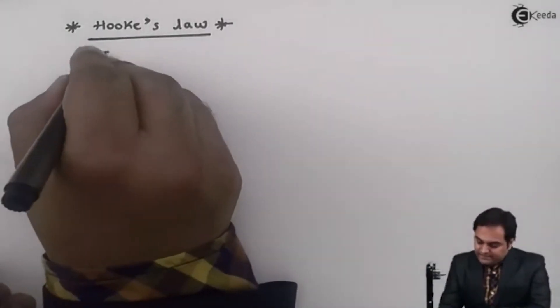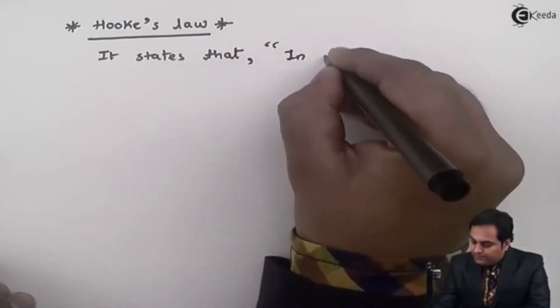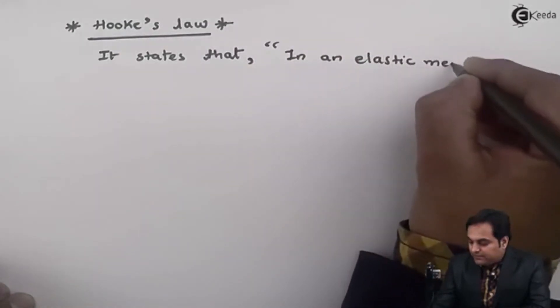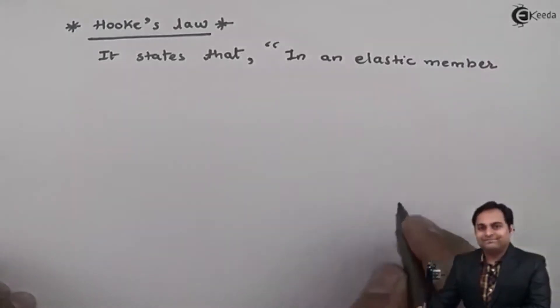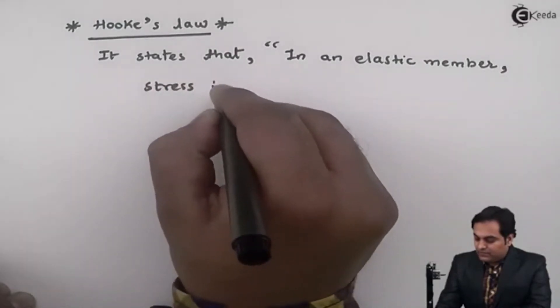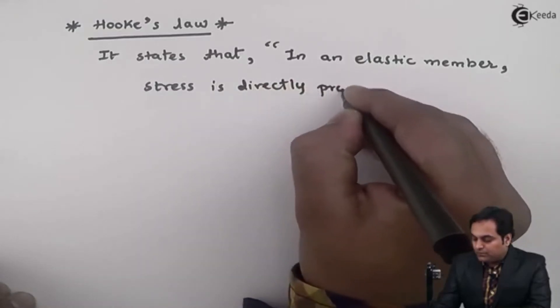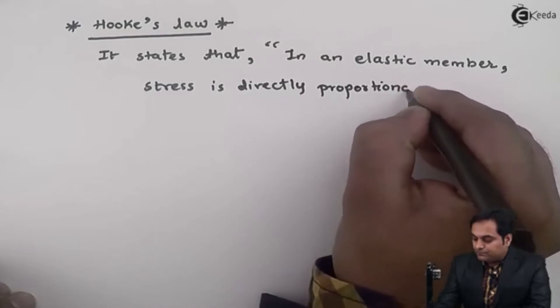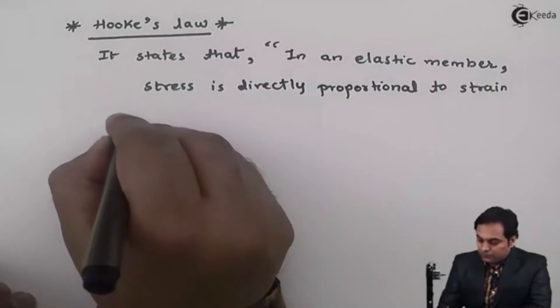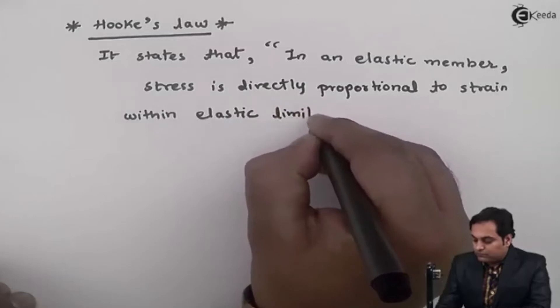Hooke's law states that in an elastic member, stress is directly proportional to strain within elastic limit.